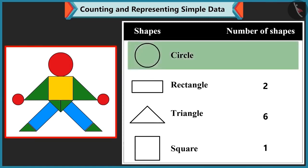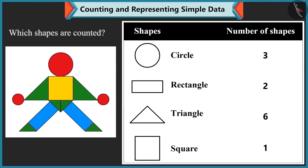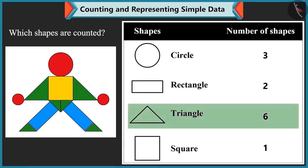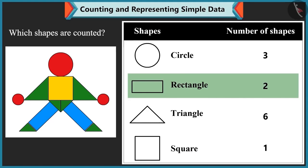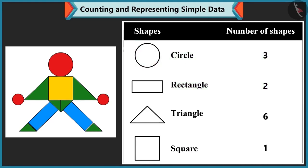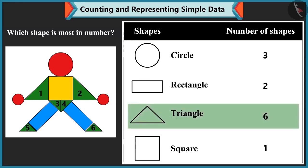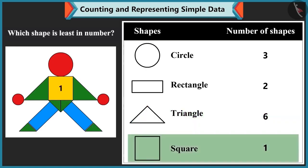Bubbly counts and says there are 1, 2 and 3 circles in the picture. Mummy asks her to recap all the shapes she counted: triangles, squares, rectangles and circles. Then asks which shape is most in number. Bubbly answers: there are 6 triangles so triangles are most, and there is only one square so square is least in number.